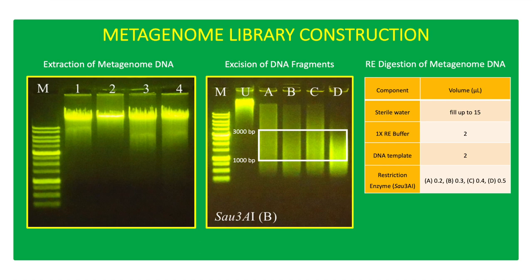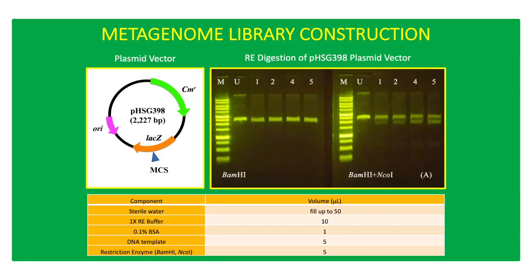DNA quantity and quality were measured using NanoDrop. PHSG398 plasmid vector carrying a chloramphenicol resistance gene was used for RE digestion.